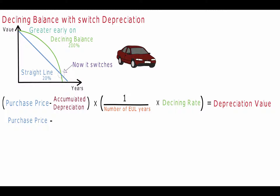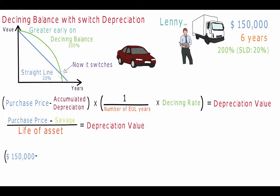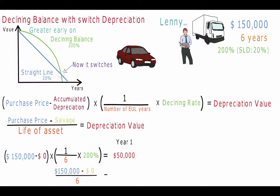Straight line depreciation is calculated as cost minus the salvage value over the estimated useful life. Lenny's company has purchased a large delivery truck for $150,000, estimated to have no salvage value at the end of six years. His depreciation rate is 200%. For declining balance depreciation, the cost minus the accumulated depreciation — which for year one is $0 — multiplied by 1 divided by the number of estimated useful years, multiplied by the depreciation rate, gives a depreciation value of $50,000. For straight line depreciation, the cost minus the salvage divided by the useful years gives a depreciation value of $25,000. He will continue to use the declining balance depreciation, as it has a higher depreciation value.